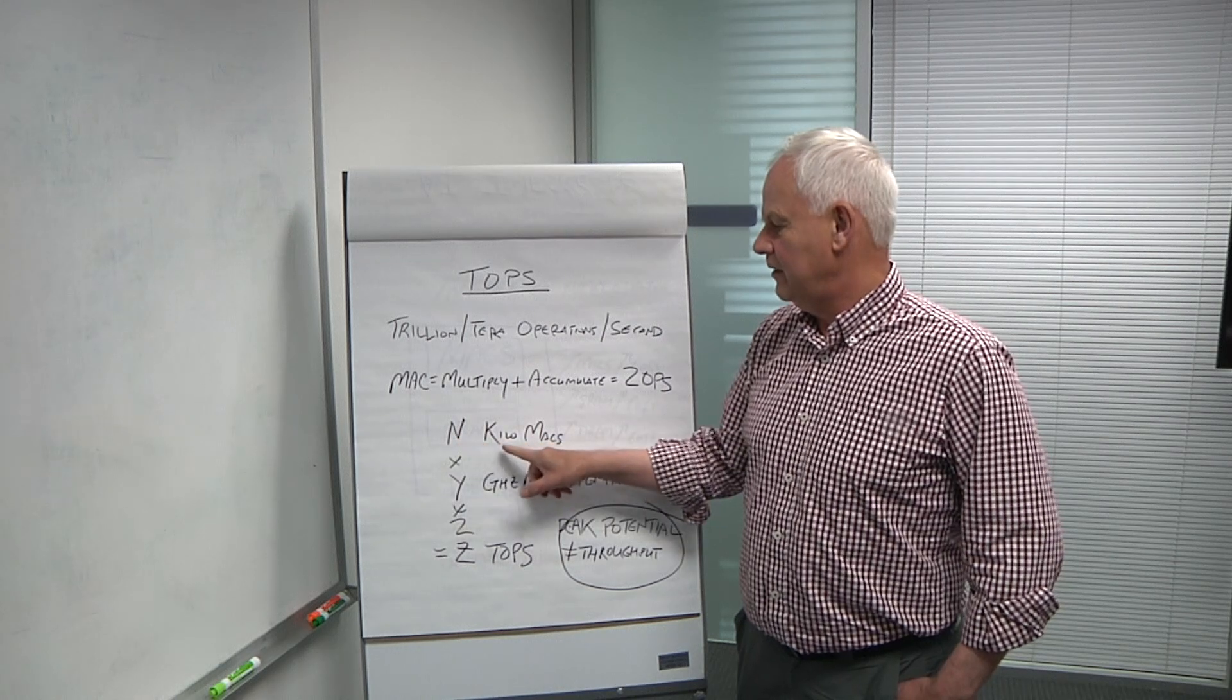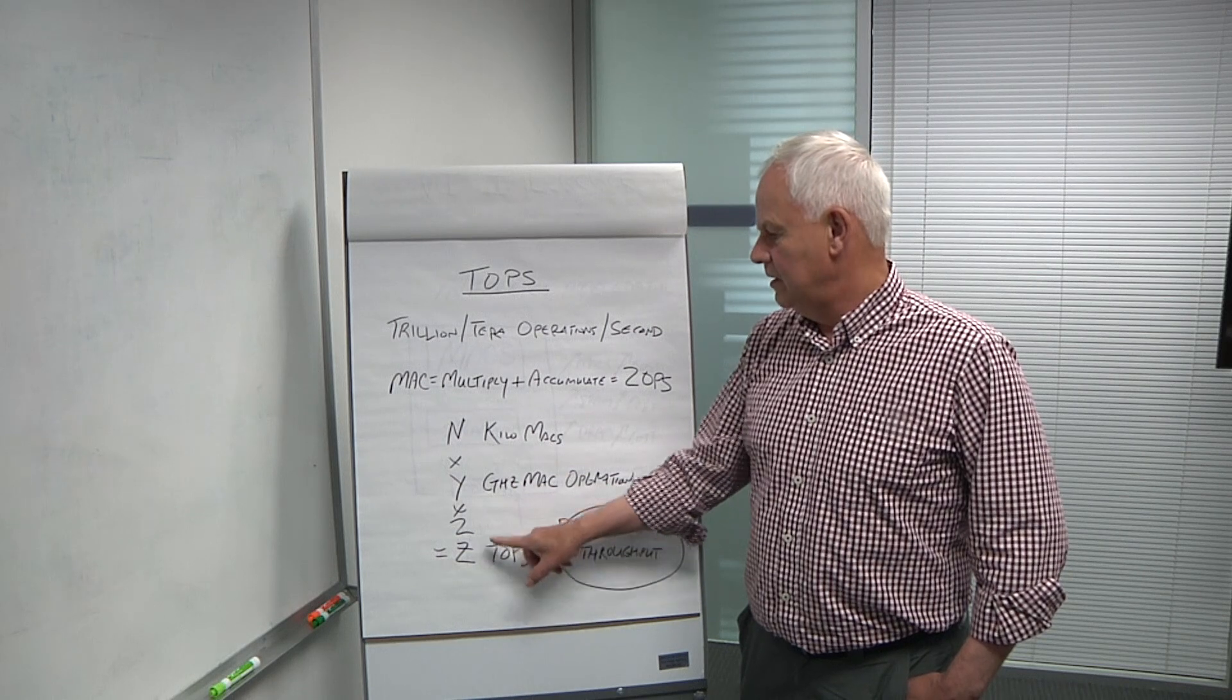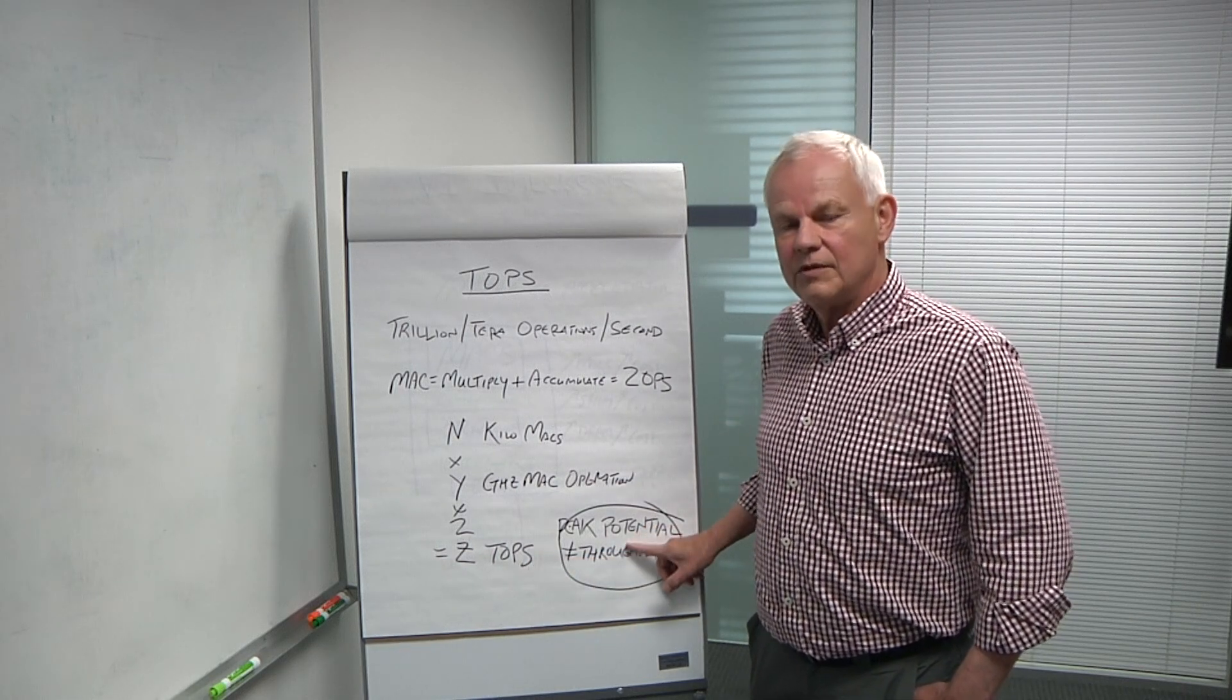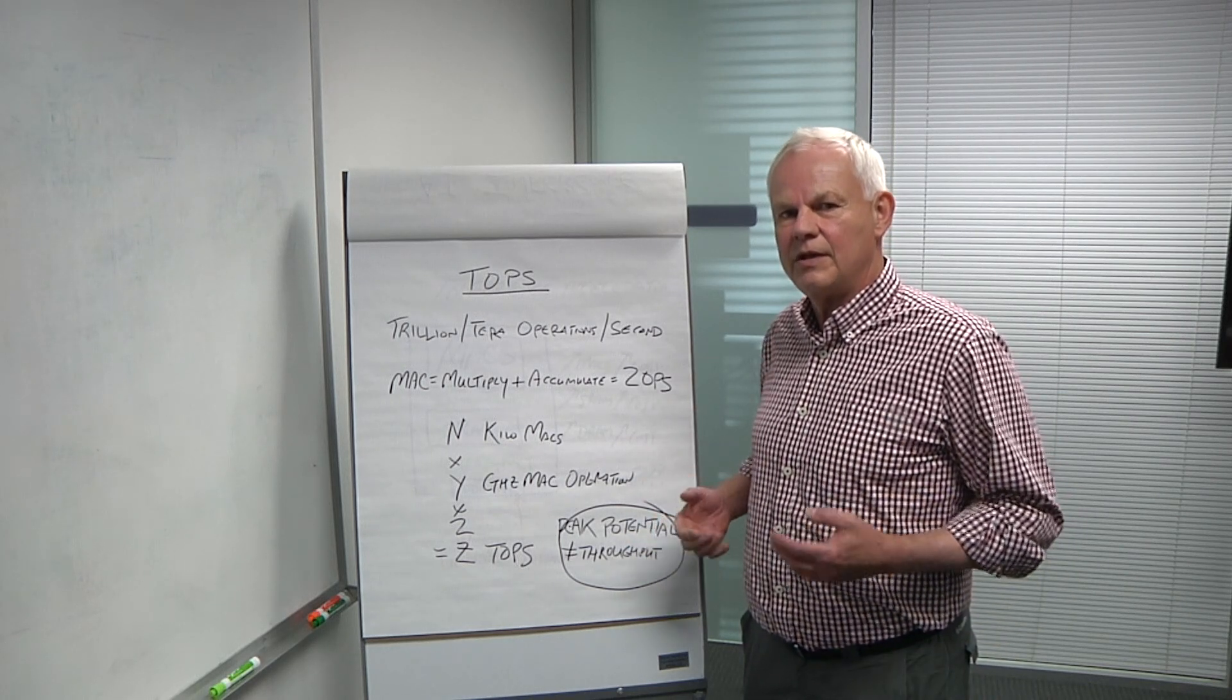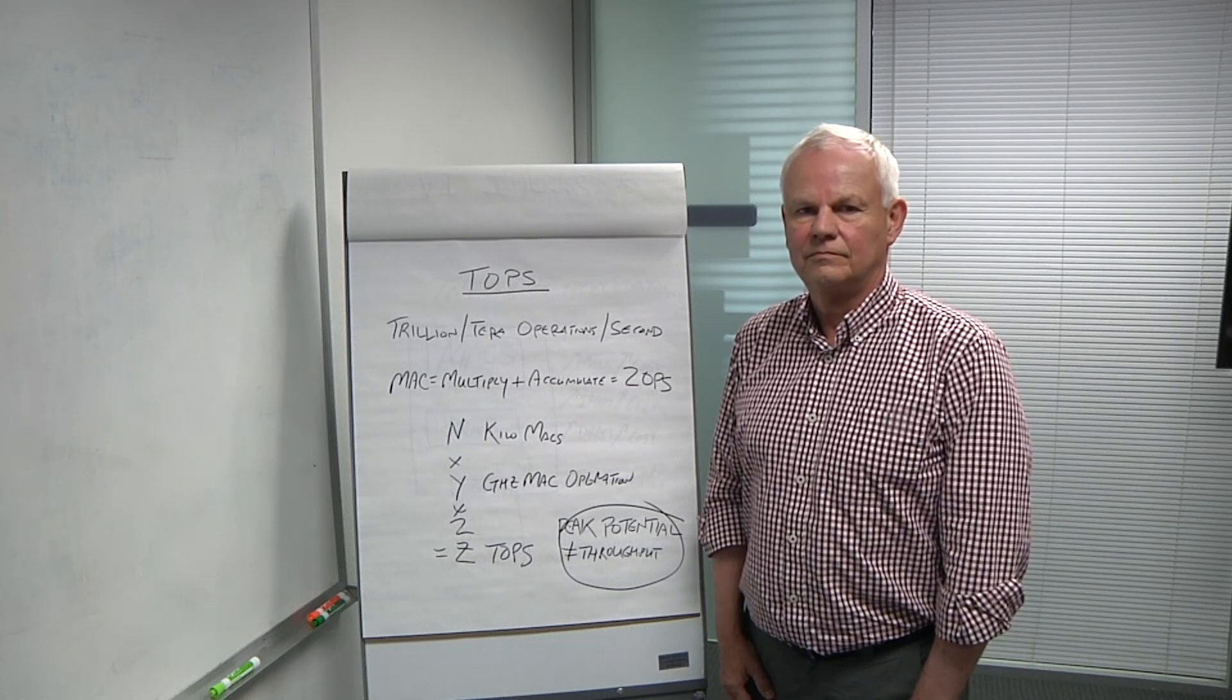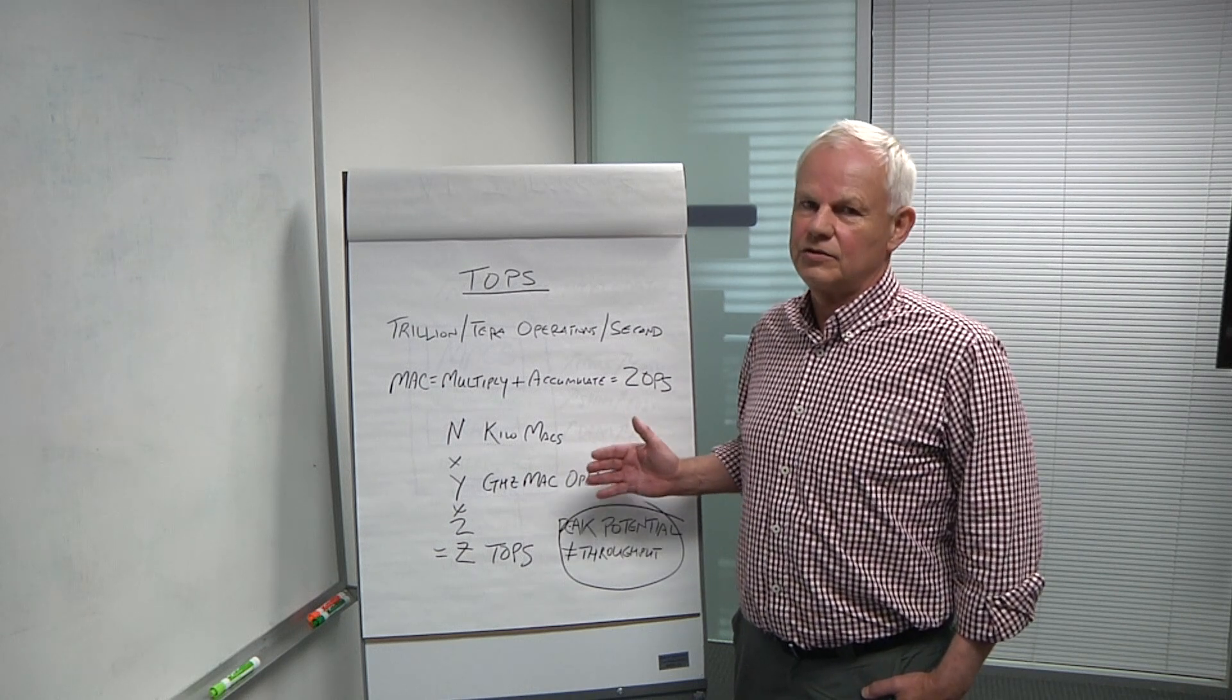So if you know how many MACs you have, N thousand MACs, and you know what frequency they run at in gigahertz, you can multiply the number of MACs in thousands by the frequency in gigahertz times two, because there's two operations for every MAC. That gives you the number of TOPS this chip is capable of. But remember, this is just peak performance. It doesn't tell you how many are actually able to be done with useful information.